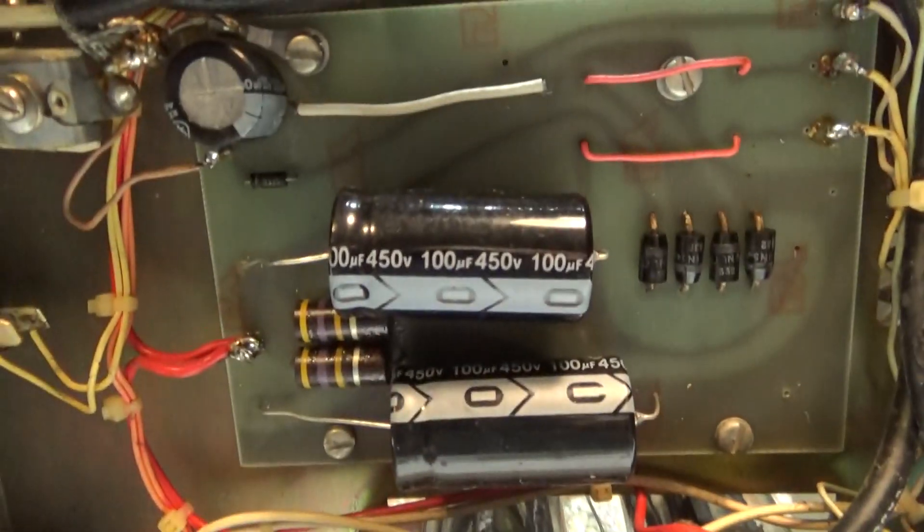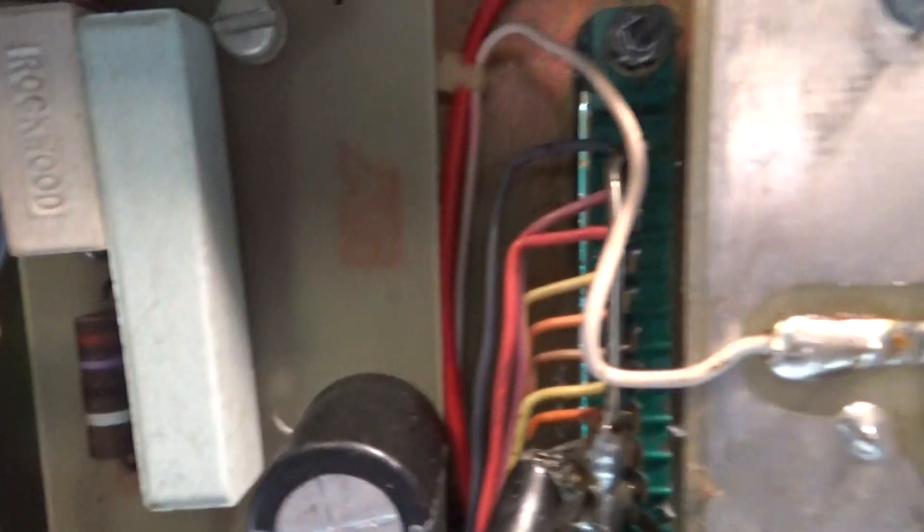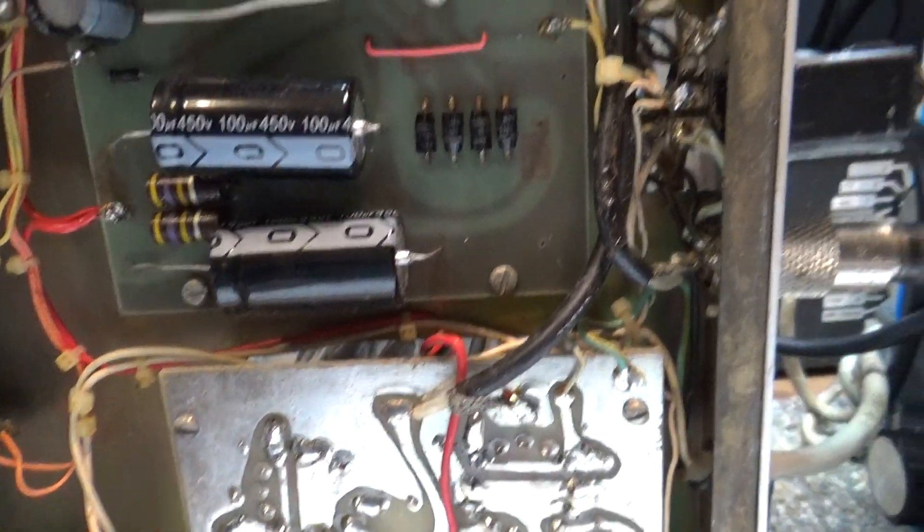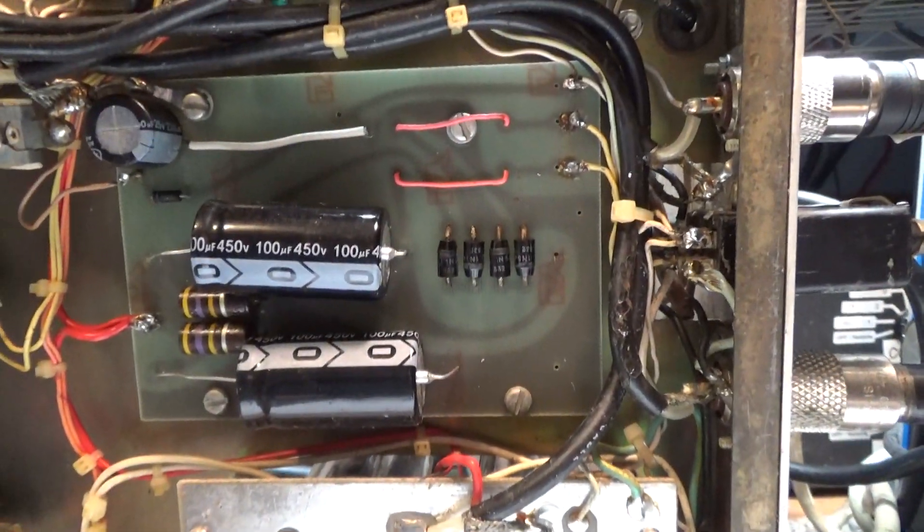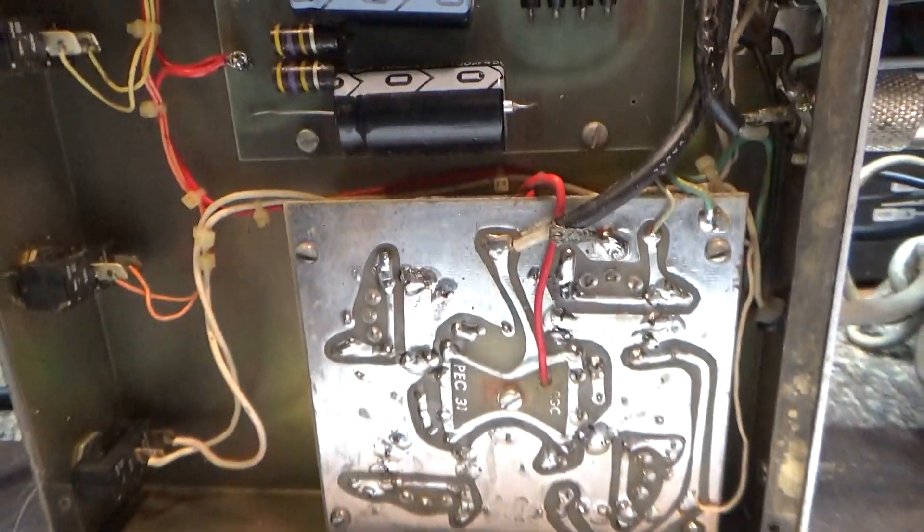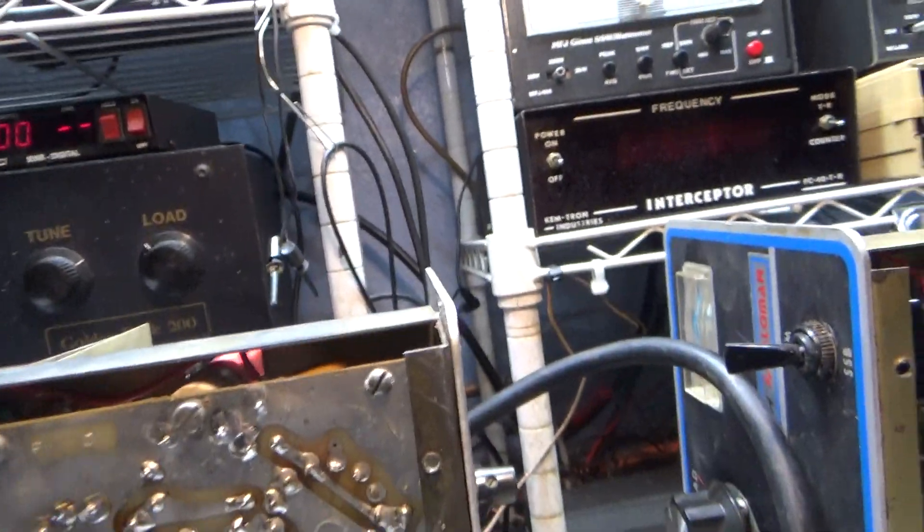So replace all your caps, guys. These 40, 50 year old amps, if you don't recap it, caps there, and that plastic one was replaced with the black one there. Same thing with this here. This one had two of them with the brown ones replaced it, but always replace your caps. If you don't recap an amp like these, you're going to have nothing but problems.